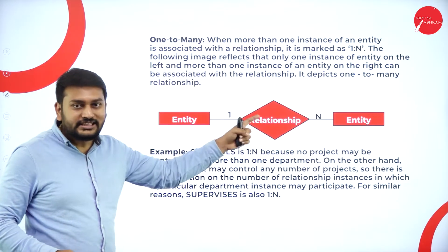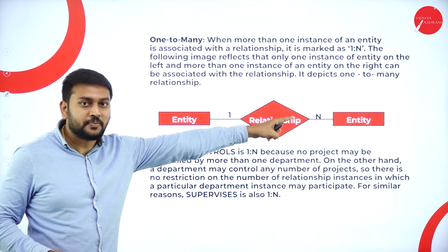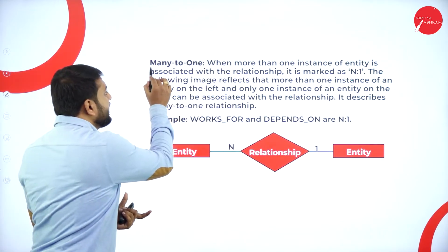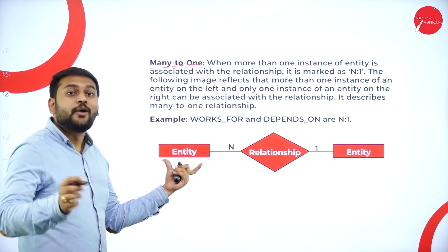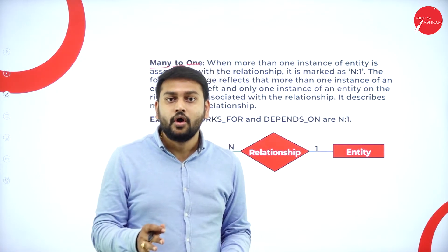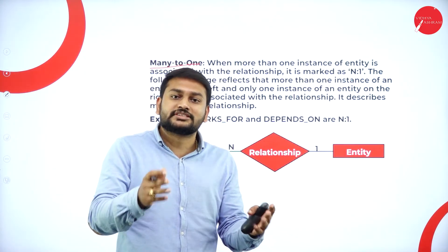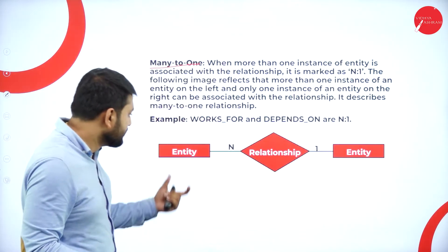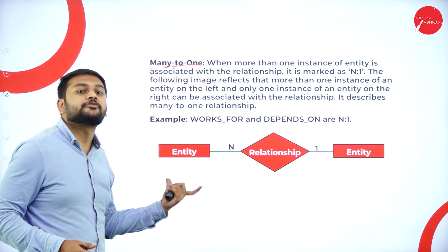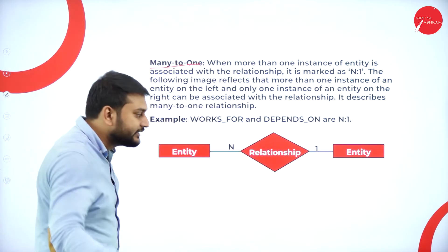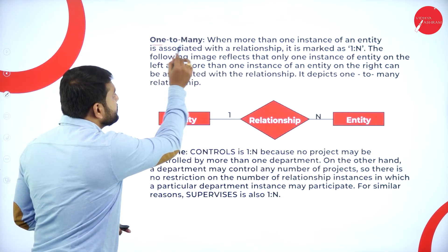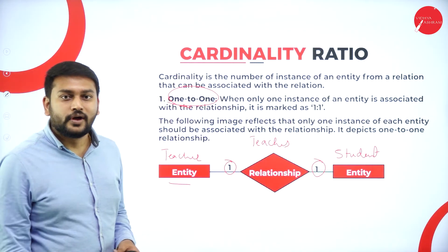When it comes to one-to-many cardinality, one teacher teaches many students. For many-to-one, many teachers teach one student — for example, many teachers teach different subjects to the same student. So in many-to-one, many teacher entities are associated with one student entity. These are different types of cardinality ratios.